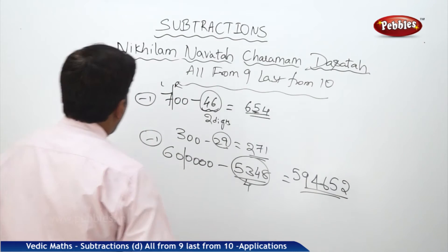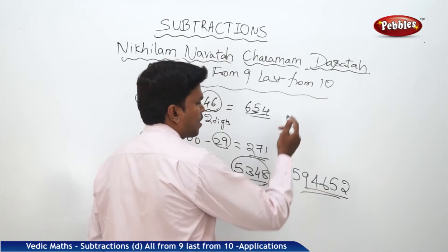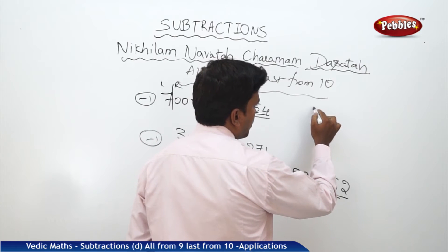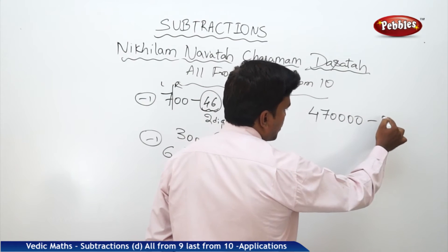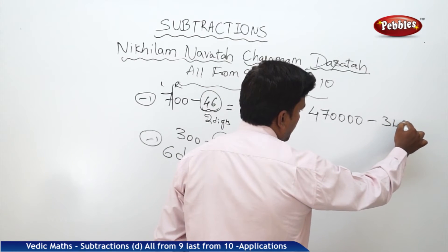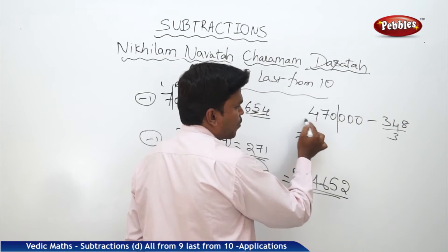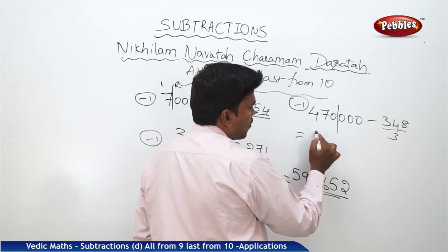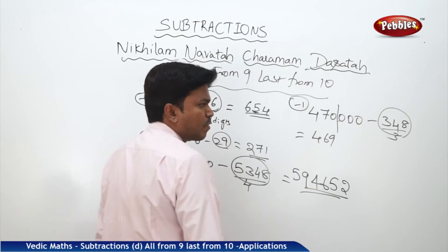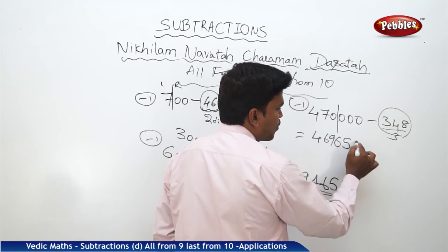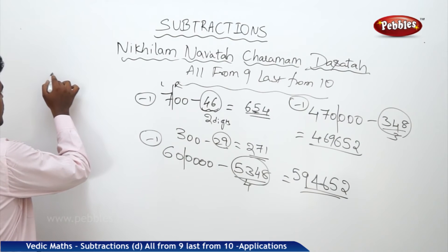One more example, going step by step in an easy and simple manner. Suppose 4700000 minus 348. How many digits? 3 digits. Make a partition: one, two, three. 4700 minus 1 is 4699. To get the remaining answer, apply All from 9, Last from 10 to 348: you get 652. So this is your answer: 4699652.